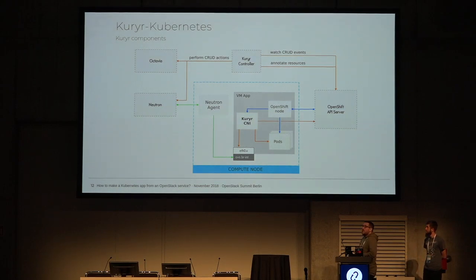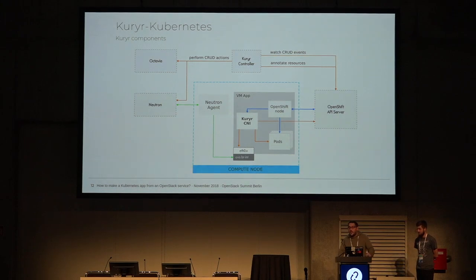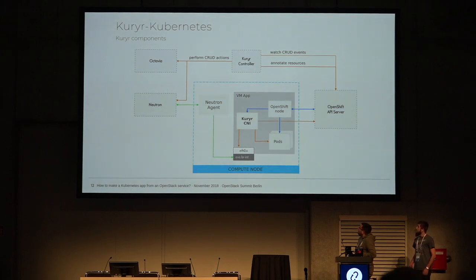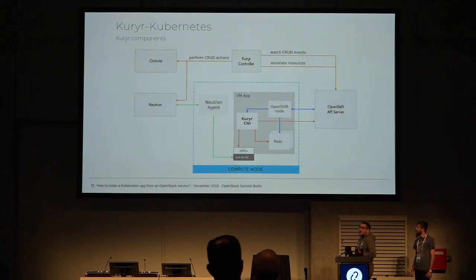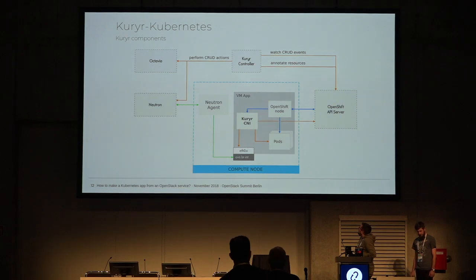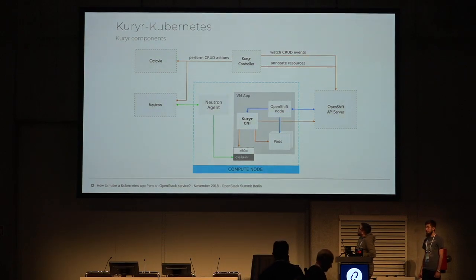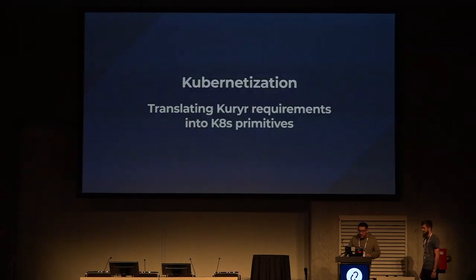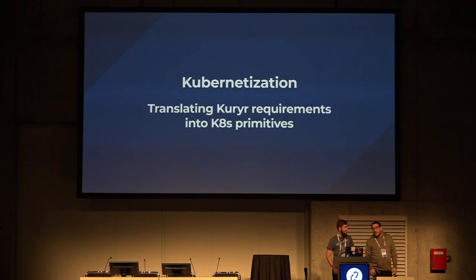We have two different use cases where you could use Kuryr. You could have a side-by-side Kubernetes cluster and OpenStack installation. The more interesting use case we're showcasing is where Kubernetes worker nodes are running on top of VMs. In this case, the Kuryr CNI performs all the wiring operations using trunk ports. I'll hand over to Michał who will explain how to create this into containers.